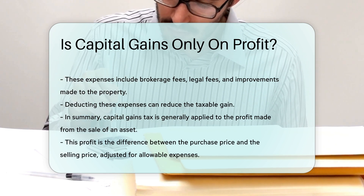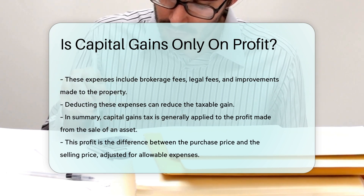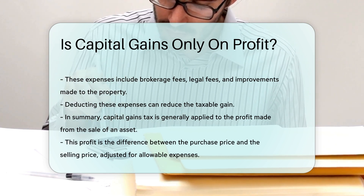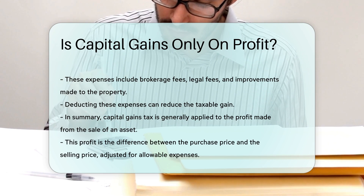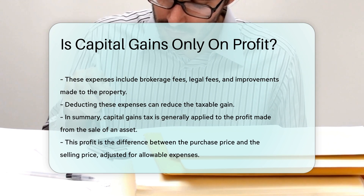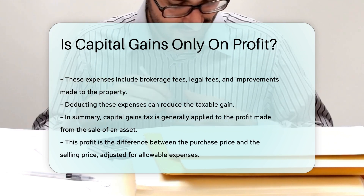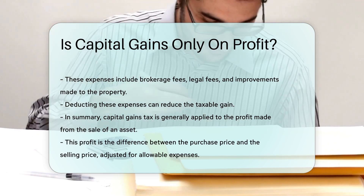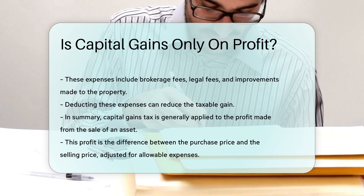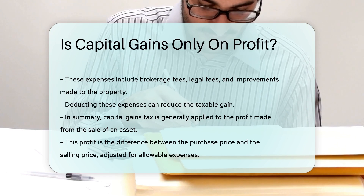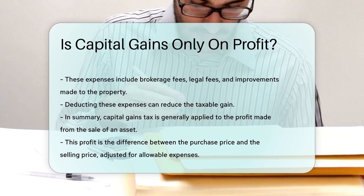In summary, capital gains tax is generally applied to the profit made from the sale of an asset. This profit is the difference between the purchase price and the selling price, adjusted for allowable expenses.